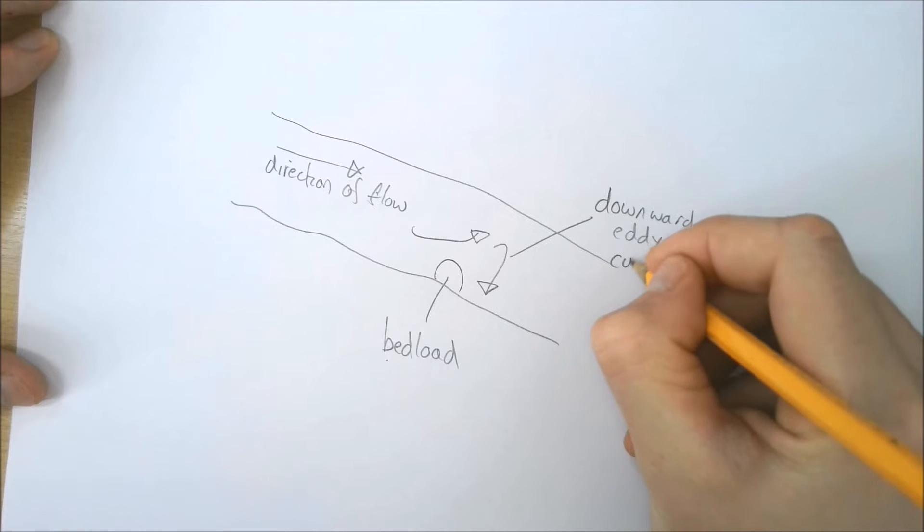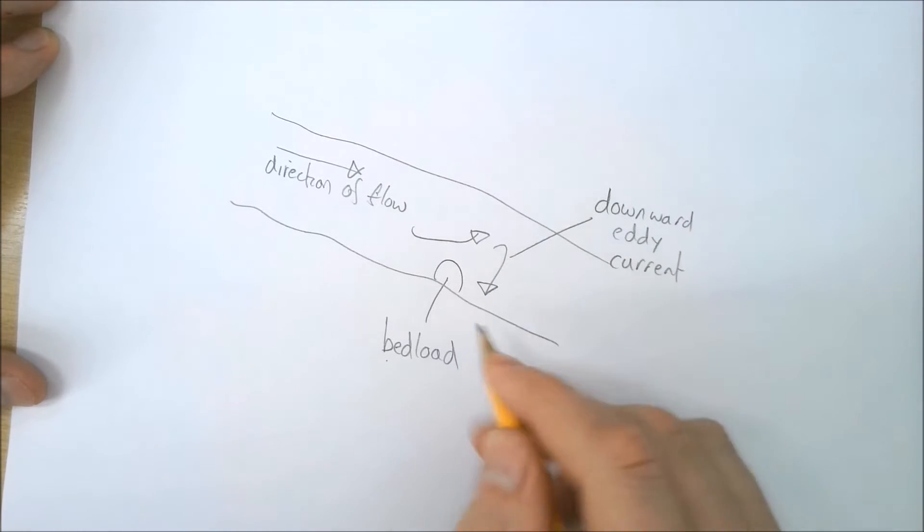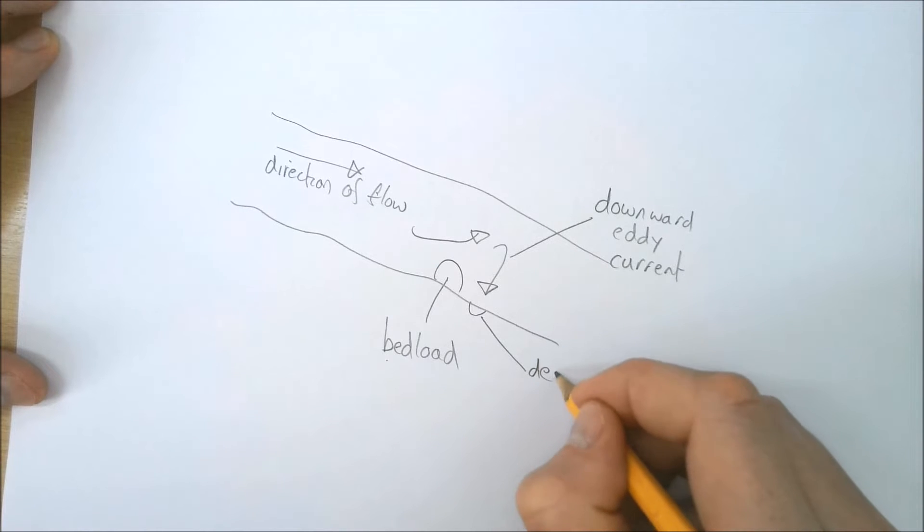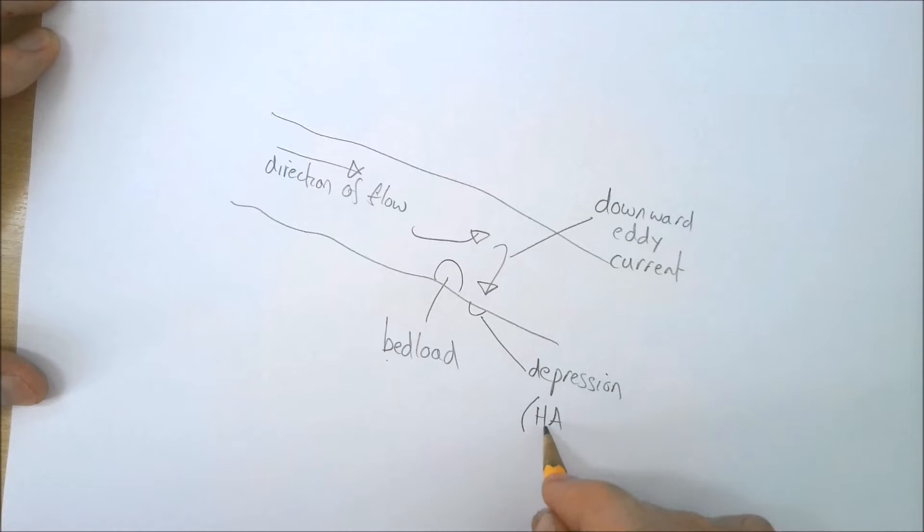As a result, we get a small hole, or a better term would be a depression, and we might want to mention that's created by hydraulic action. Probably in an exam you want to write that out rather than abbreviating it. And if we're A-level, we also should probably mention cavitation.